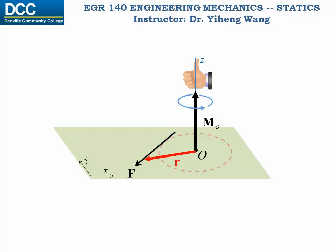The moment about point O caused by force F is calculated in vector form simply as the cross product of position vector R and force vector F. Note that R could be any vector as long as it starts from point O and ends anywhere on the line of action of the force.